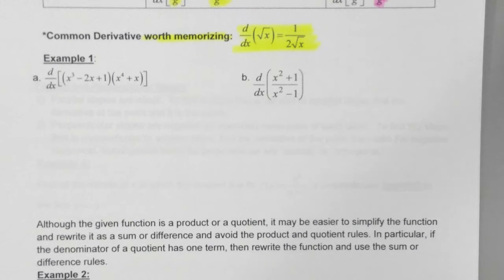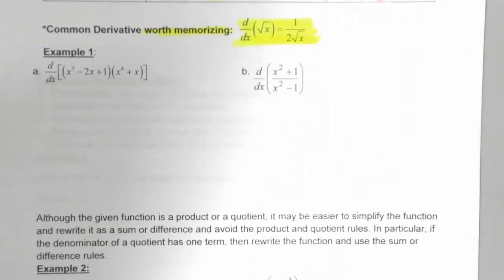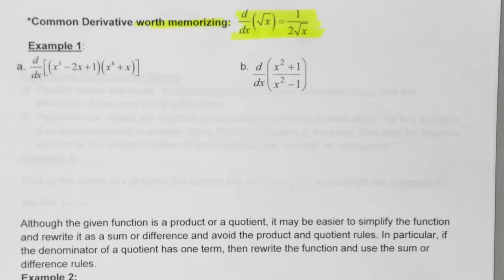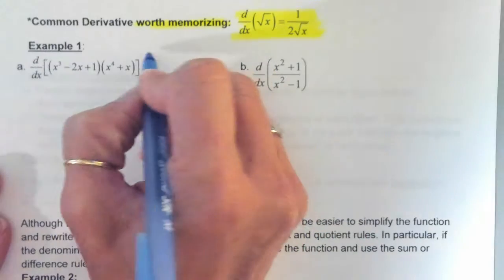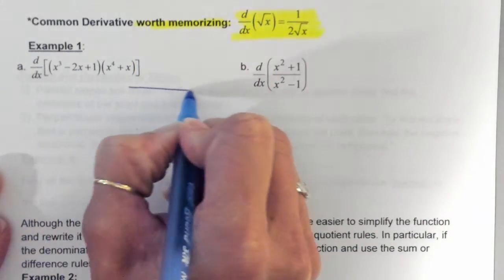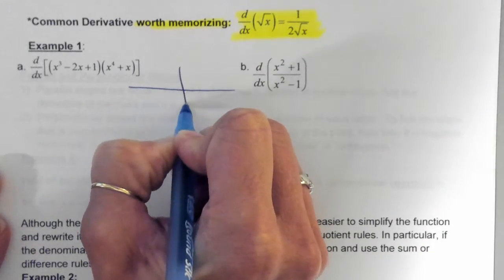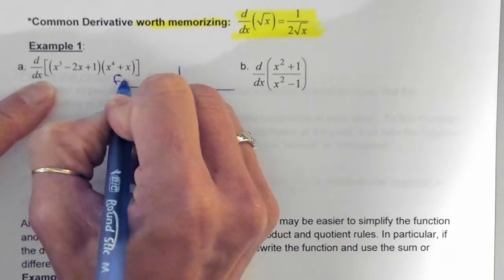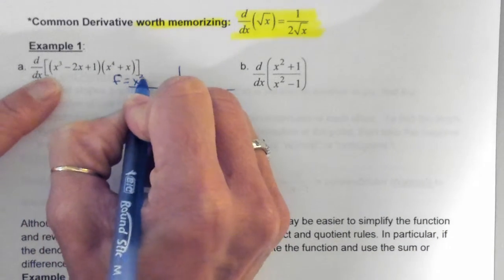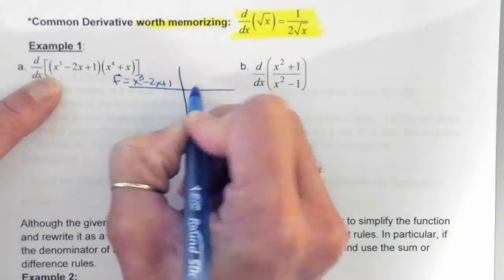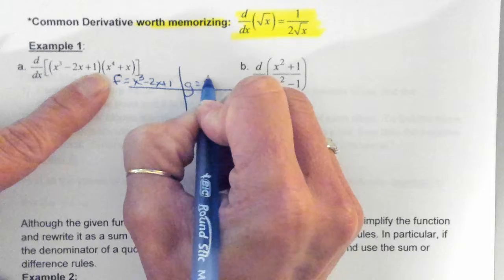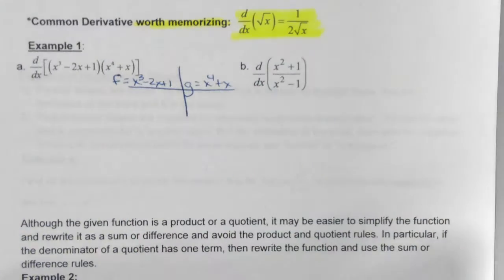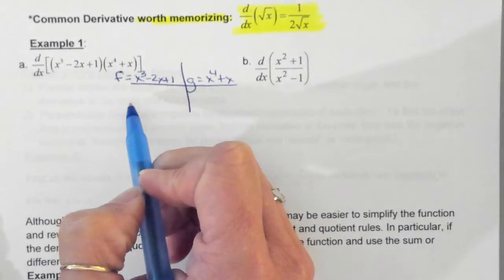Worst case scenario, though, if you forget and you know your rules, your power rule is the one that you're going to use most often. You can definitely use that. So here we have in example one, we are looking at the derivative of a product, and then in the second example, we're going to take a look at the quotient. So we're going to set it up like this, identify what we want as F and what we want as G. So we're going to set up a little table like this.